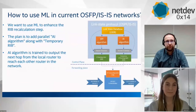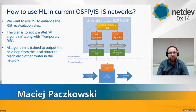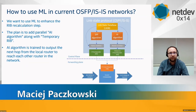Now let's focus on how we can use machine learning in current link state routing protocols like OSPF or ISIS. We want to use machine learning to enhance the routing information base recalculation step. We added an additional parallel AI algorithm. Our solution is based on running an AI algorithm — it can be a neural network — that would compute the routes in parallel with the primary Dijkstra algorithm. The algorithm would be trained to output the next hop from the local router to reach other routers in the network. The overall goal is to reduce the time needed to construct a functional forwarding information base that is, with high probability, good enough to direct packets until the full SPF calculation is done.